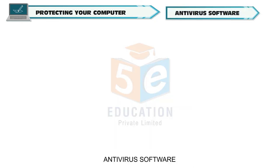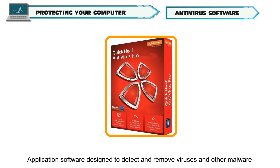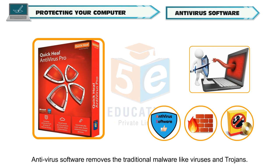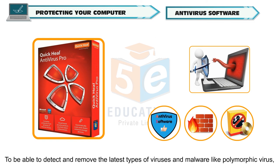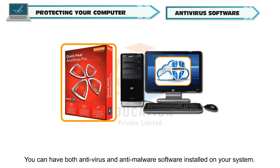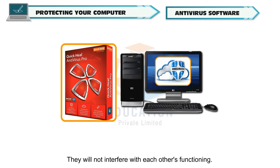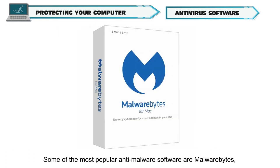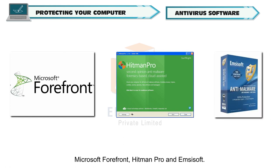Anti-virus software. Application software designed to detect and remove viruses and other malware on your system is called anti-virus software. Anti-virus software removes traditional malware like viruses and Trojans. To be able to detect and remove the latest types of viruses and malware like polymorphic virus, you should install anti-malware software. You can have both anti-virus and anti-malware software installed on your system — they will not interfere with each other's functioning. Some of the most popular anti-virus software are Quick Heal, Norton 360, Kaspersky Antivirus and McAfee Antivirus. Some of the most popular anti-malware software are Malwarebytes, Microsoft Forefront, Hitman Pro and MCsoft.